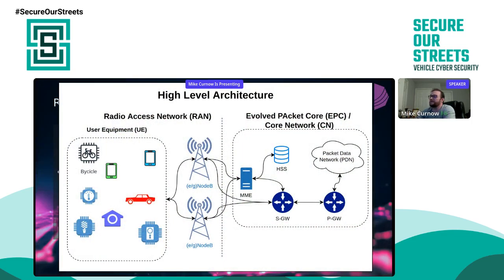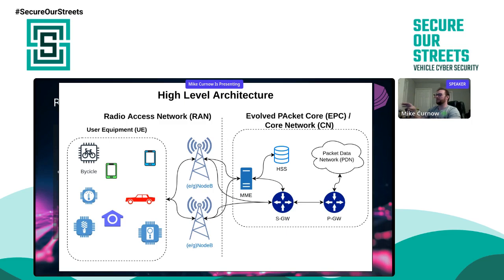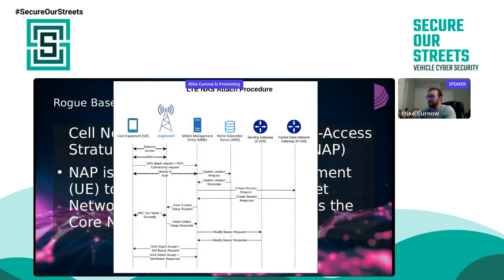Splitting the architecture down the middle: on the left we have the radio access network, which is everything from your UE to the cell tower itself — your mobile or cell-connected devices to the cell of a cell tower. On the backend we have the backend components that facilitate actual communication for calls, SMS texts, and internet connectivity. In LTE, the NAS attached procedure is very similar for 5G — the main difference is that the MME, HSS, and various gateways are more virtualized rather than bare metal components.